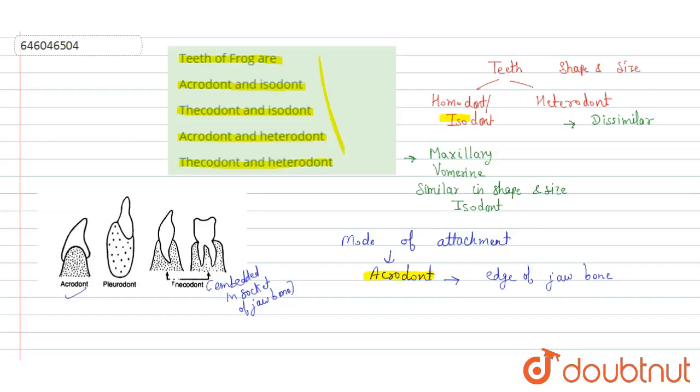From here we can conclude that in frog the teeth are isodont and acrodont. So our correct answer here will be option number one, and rest of the options are incorrect. So the correct answer is acrodont and isodont. Thank you.